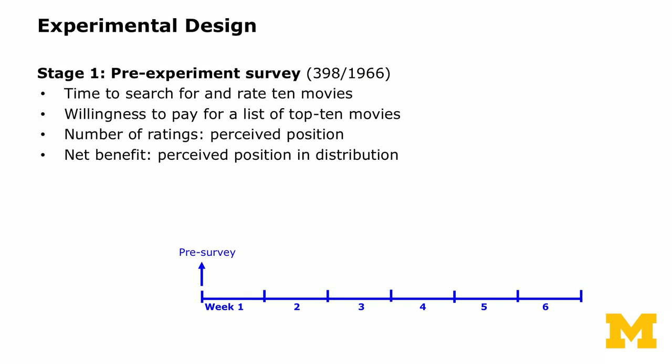Our experiment design had three stages. The first is the pre-experiment survey — remember the DIF-IN-DIF — so we collected behavioral data before our experiment to help with the diff-in-diff analysis, and we also collected survey data: time it took them to search for and rate 10 movies, their willingness to pay for a list of top 10 movies, and so on.